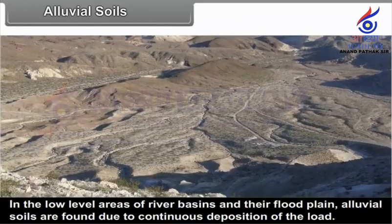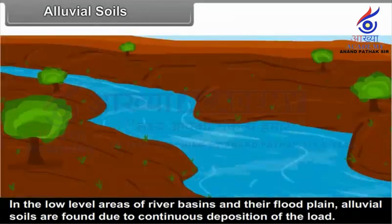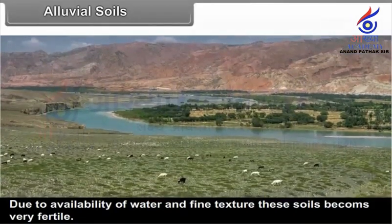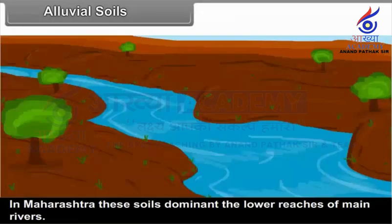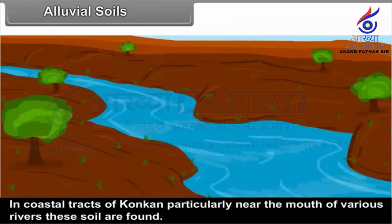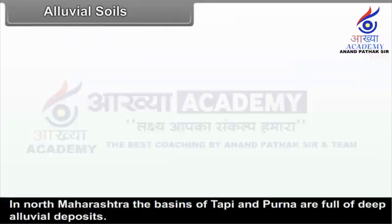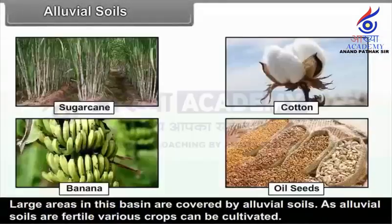Alluvial Soils. In the low-level areas of river basins and their flood plains, alluvial soils are found due to continuous deposition of load. Due to availability of water and fine texture, these soils become very fertile. In Maharashtra, these soils dominate the lower reaches of main rivers. In coastal tracts of Konkan, particularly near the mouth of various rivers, these soils are found. In North Maharashtra, the basins of Tapi and Purna are full of deep alluvial deposits. As alluvial soils are fertile, various crops can be cultivated.